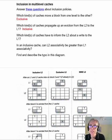Which kinds of caches propagate an eviction up from the L2 to the L1? Inclusive caches, because if a block disappears from one level, it has to disappear from higher levels. Which kinds of caches have to inform the L2 about a write to the L1? Inclusive caches, because if a write is made to the L1, then that same data needs to be included in the L2.